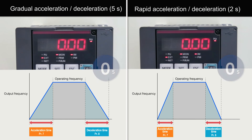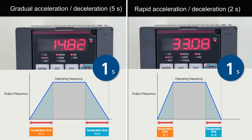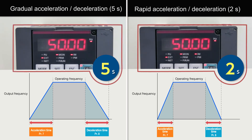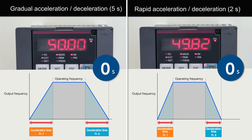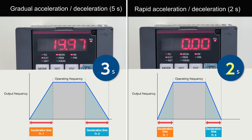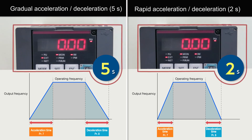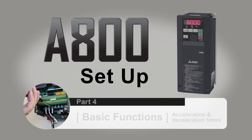This setting adjusts the acceleration and deceleration times by lengthening the time for gradual acceleration or deceleration, and shortening the time for rapid acceleration or deceleration. This completes the instructions on how to set basic acceleration and deceleration time settings. Thank you.